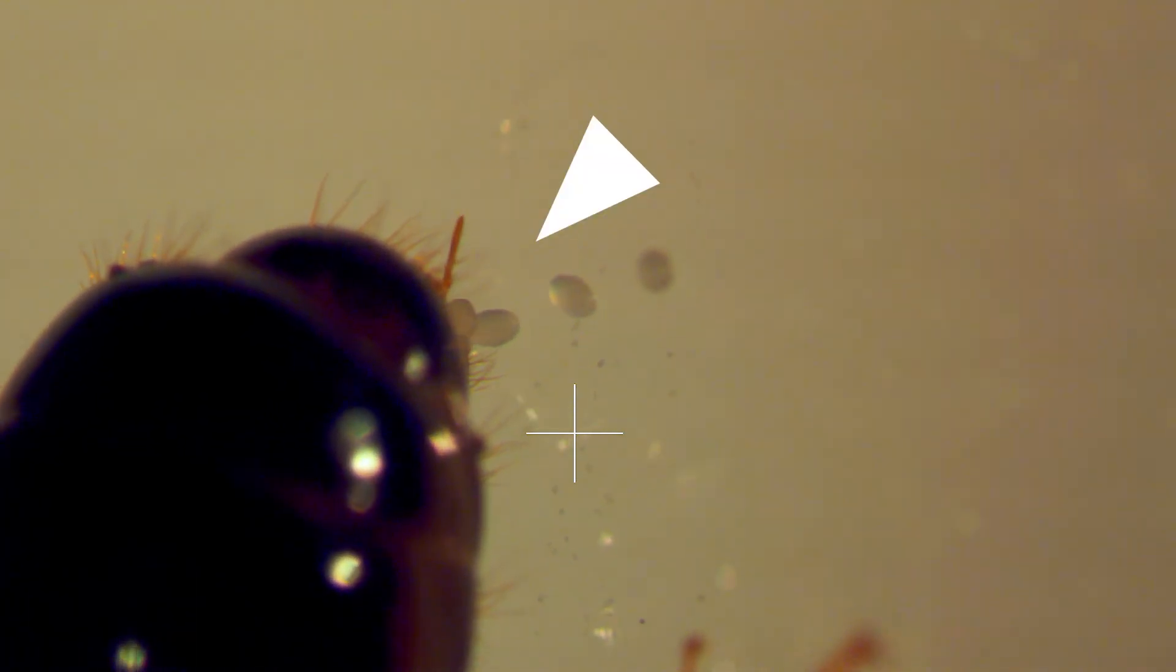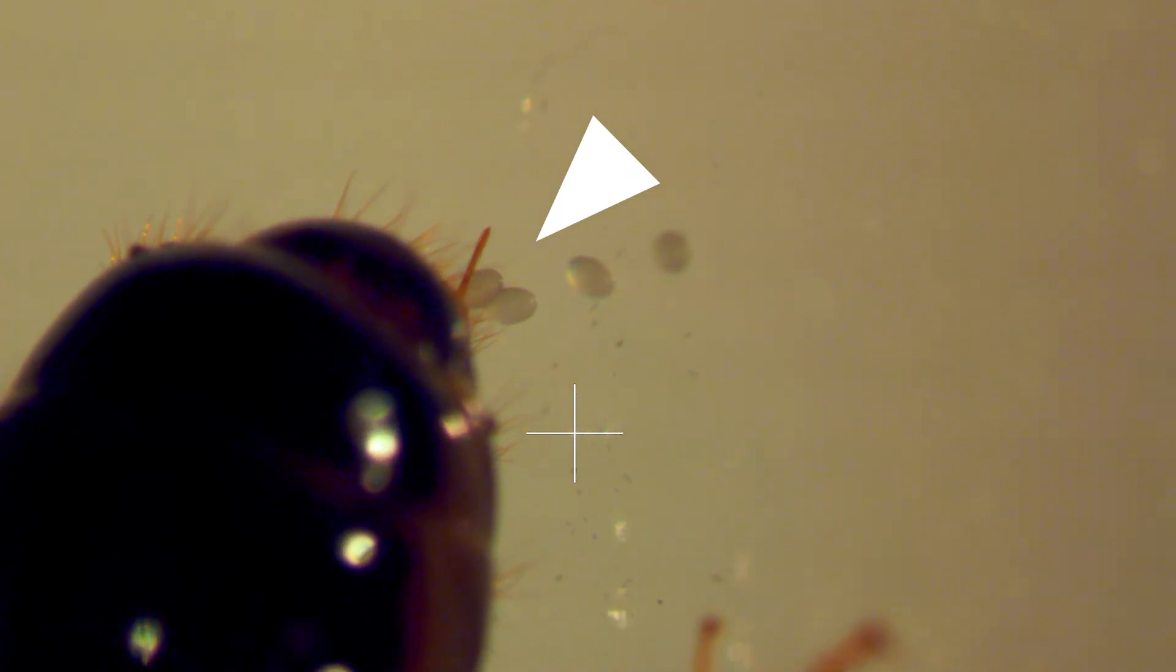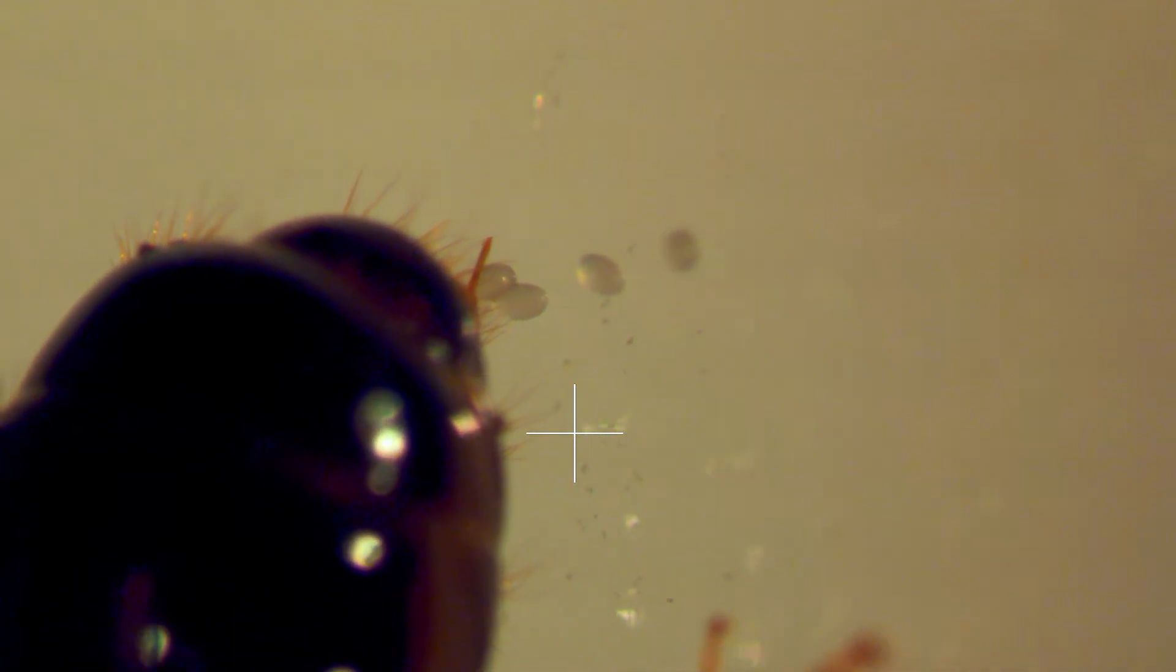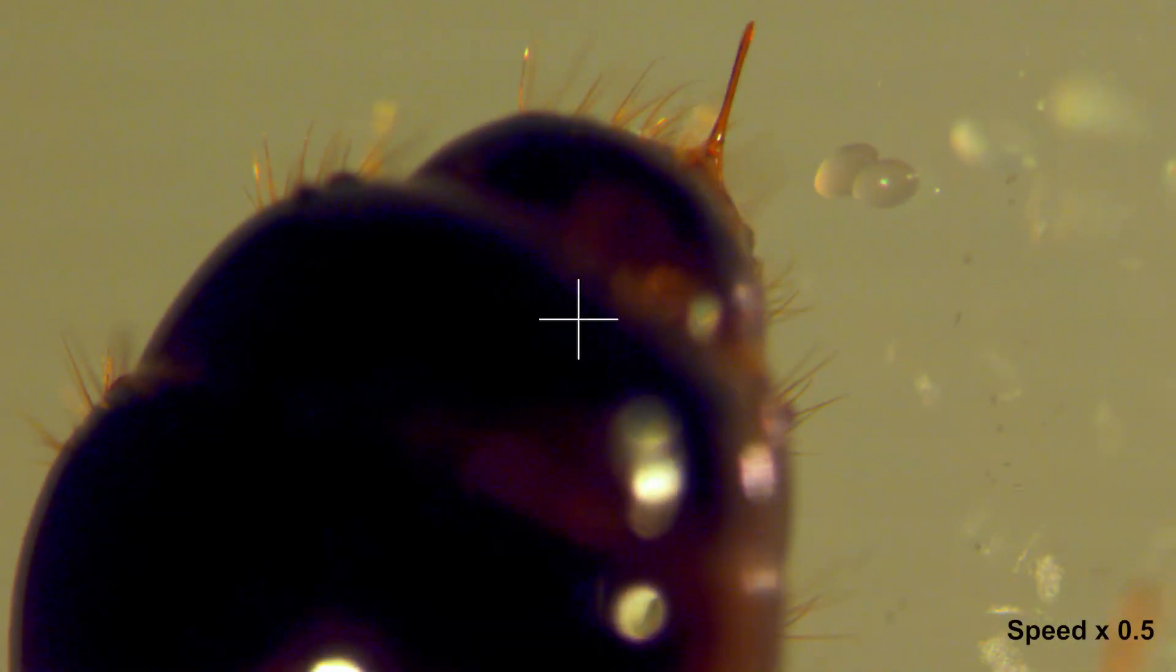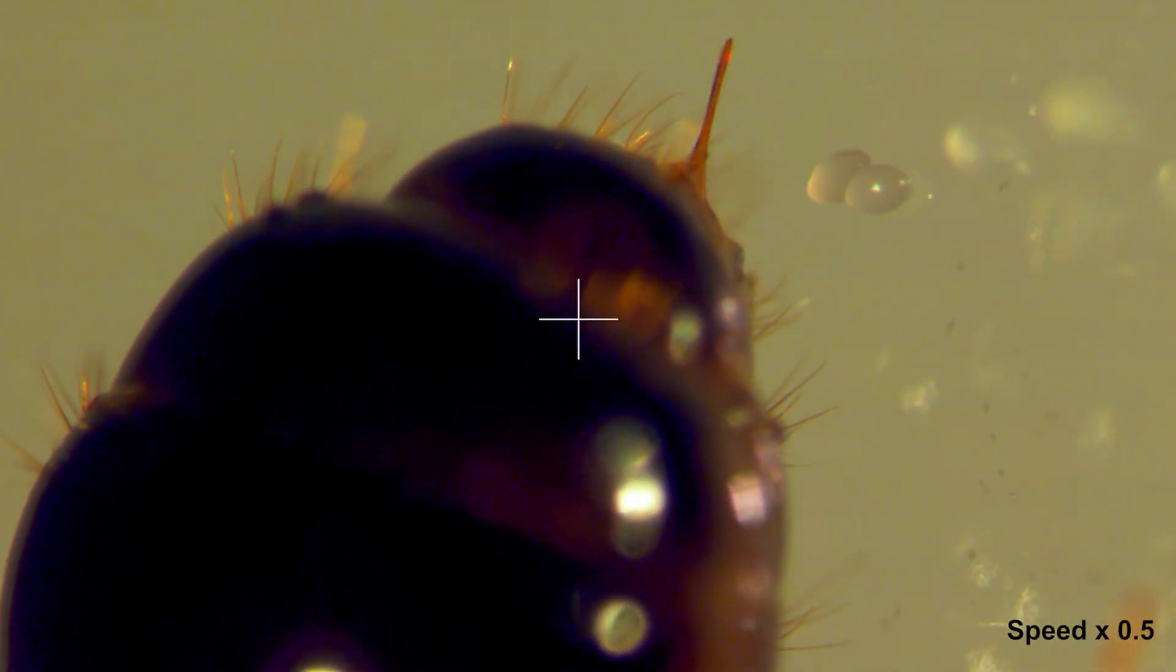Here is the gaster of a monogyn queen. You can see the sting sticking out. When she's about to lay an egg, she contracts the gaster and tries to squeeze the egg out.